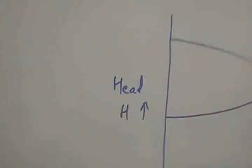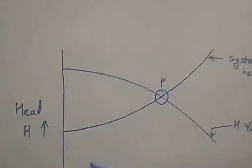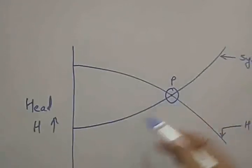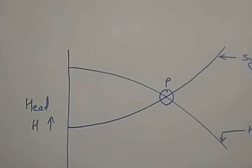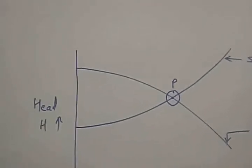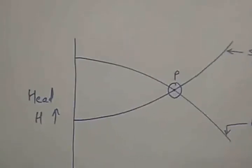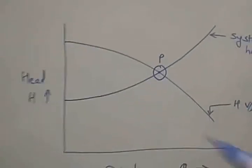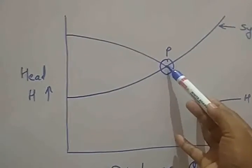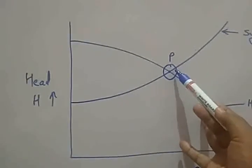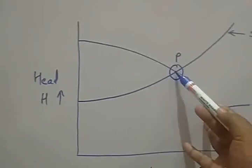The system head curve gives the head demanded by a pumping system for a particular discharge. At point P, the head demanded by the system equals the operating head for that particular discharge. So point P is where head demanded by the system equals the operating head of the pump for a particular discharge.